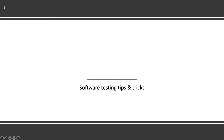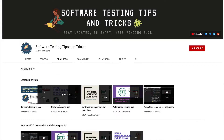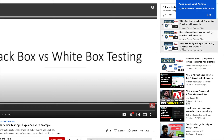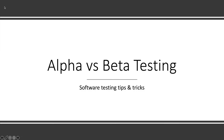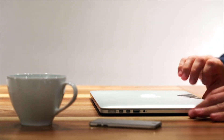Welcome back to the software testing tips and tricks channel. In this video we will talk about alpha versus beta testing. In previous videos we have already discussed sanity testing, smoke testing, unit, integration, system testing, white box testing, black box testing, functional and non-functional testing. Mostly in interviews they ask what is alpha testing and beta testing — even though you may be doing it, you may not know how to exactly answer it: when we do this and who will do this.